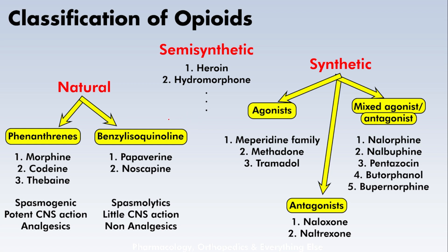Regarding opioids, we have natural, semi-synthetic, and synthetic types. Both natural and semi-synthetic opioids act as agonists on opioid receptors. Examples of natural opioids include morphine and codeine; semi-synthetic examples include heroin and hydromorphone. Among synthetic opioids, there are agonists like methadone and meperidine, mixed agonist-antagonists like nalorphine and nalbuphine, and then synthetic antagonists such as naloxone and naltrexone.